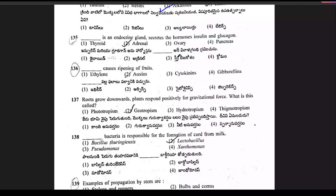Question 135: blank is an endocrine gland that secretes the hormones insulin and glucagon. The correct answer is option 4 — pancreas.